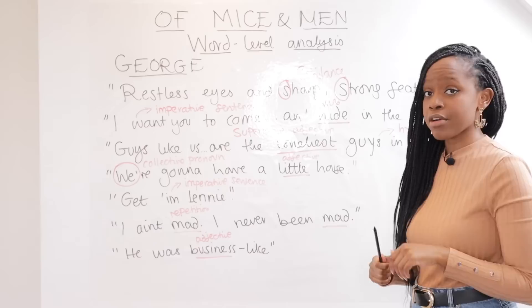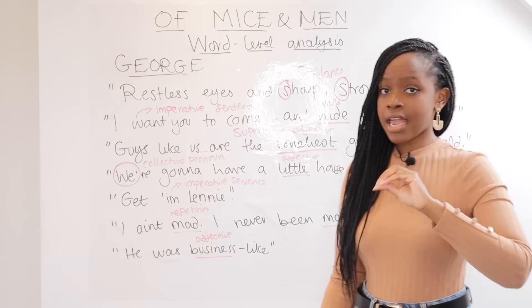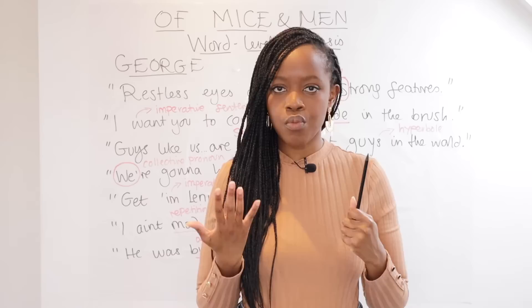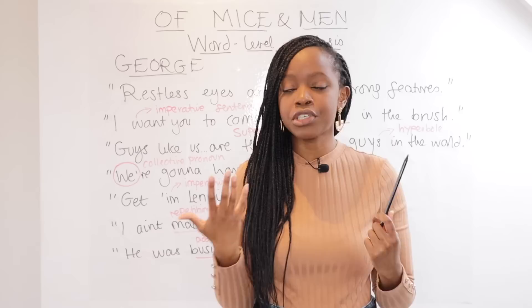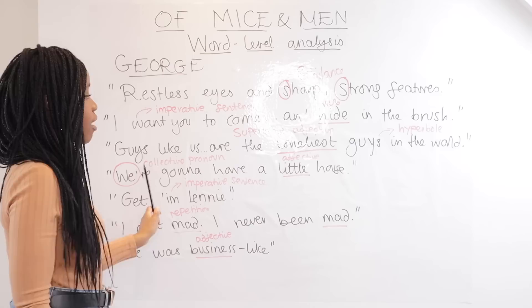The word-level analysis for this quotation: firstly, it's an imperative sentence — a sentence that issues a command — which is a structural feature. Secondly, point out the verb 'hide.' This illustrates that Lenny's brute force and sheer power aren't enough for him to survive in the modern world. He also needs cunning and intellectual ability, which he sadly lacks. Hence he is reduced to a creature hiding in the shadows once he makes a mistake.